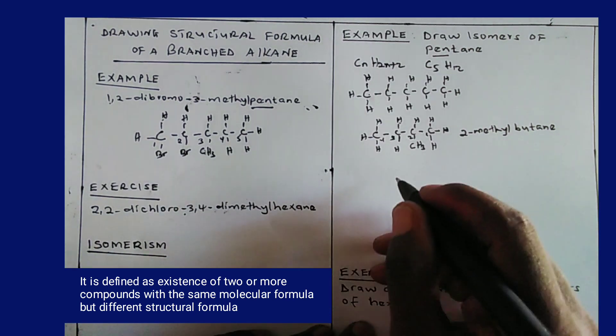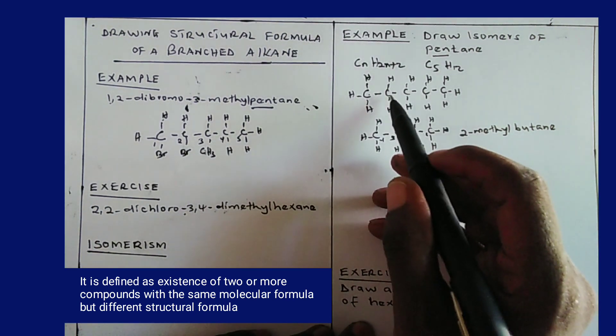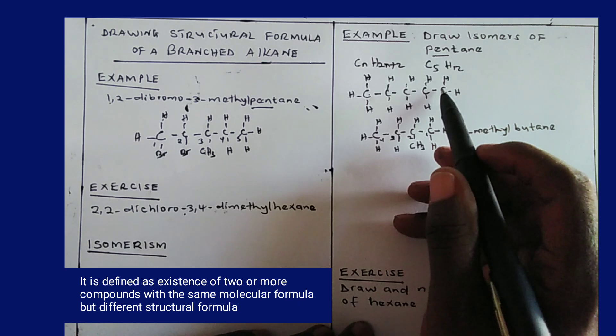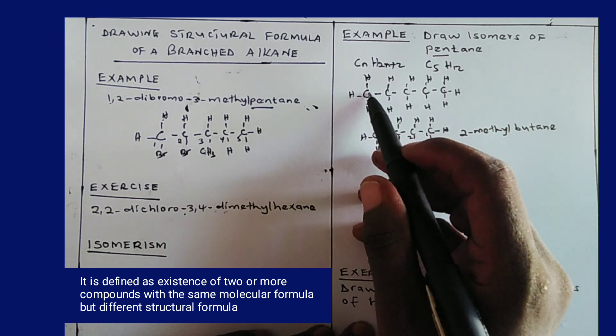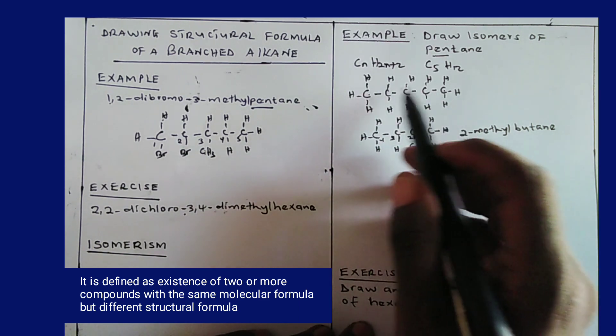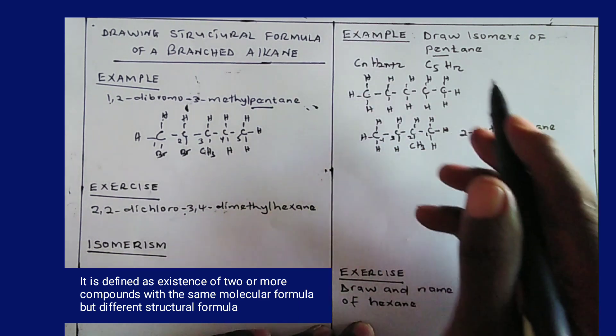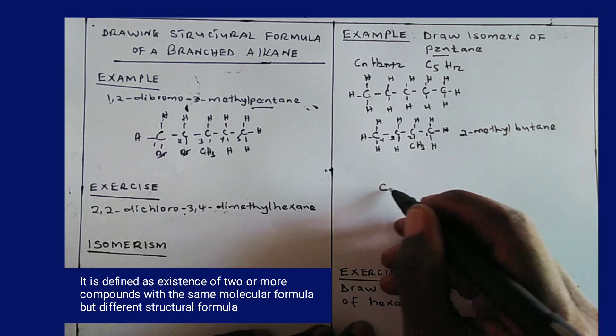Now to draw the next isomer I can still modify this structural formula here by removing this carbon atom and this carbon atom here so that it forms two methyl branches. So if I remove two carbon atoms I remain with three carbon atoms in the chain. So I draw three carbon atoms